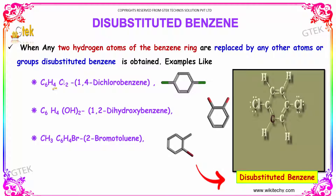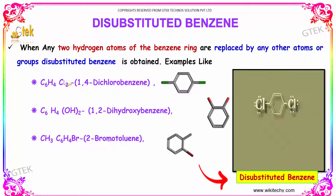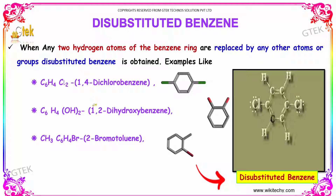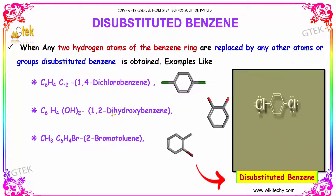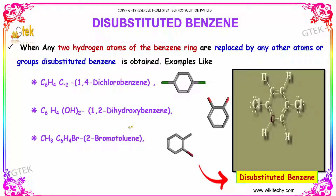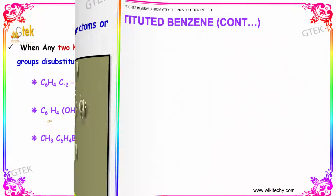For example, C6H4Cl2 is named as 1,4-dichlorobenzene. Similarly, if there is a C6H4(OH)2 group present, we name it as 1,2-dihydroxybenzene. If bromine is present, it is known as 2-bromotoluene.